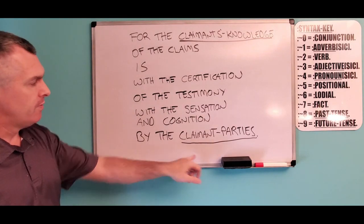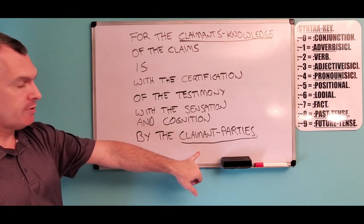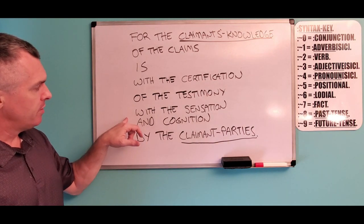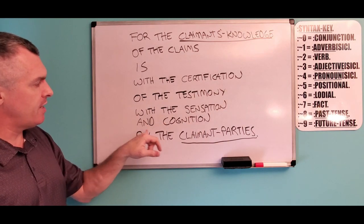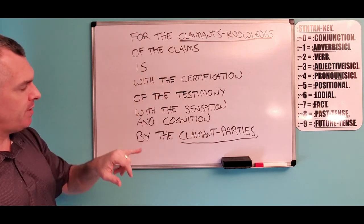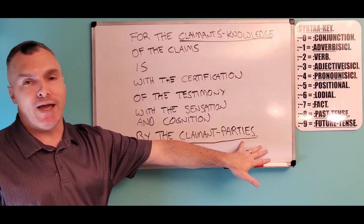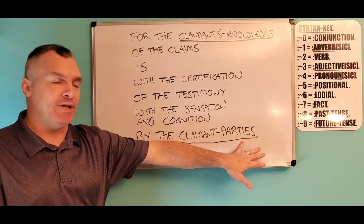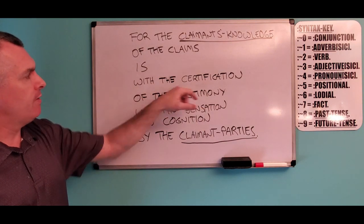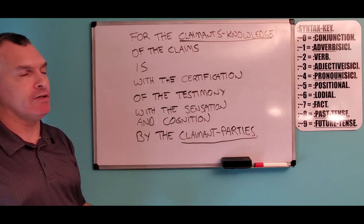Backwards: for the claimant's parties. Now this becomes the cause. And what is it concerned with? Of the sensation and cognition. Now we drop our verb in — but going backwards, we have a plural cause, so now the verb becomes 'are': 'Are, with the testimony of the certification, with the claims, by the claimant's knowledge.' Period.